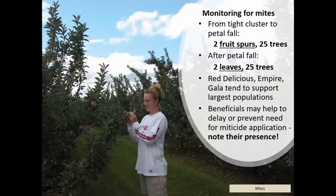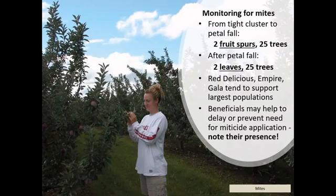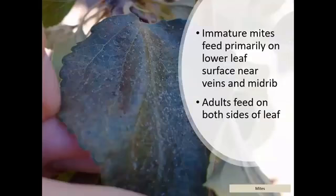For mite monitoring in the early stage from tight cluster to petal fall, look at fruit spurs for signs of overwintering eggs and early hatch activity. Following petal fall, collect ideally two leaves from 25 trees throughout the orchard and examine them under a hand lens or microscope to check for mite activity. Red Delicious, Empire, and Gala tend to support the largest populations, but no trees are known to be resistant. It's also really important when doing mite counts to also record the beneficials, as this can help delay or prevent the need for a miticide application. Under high pressure, mites can feed on both the underside and the top part of the leaf.